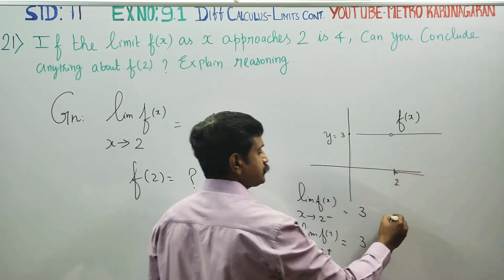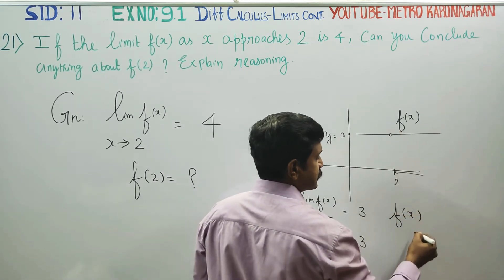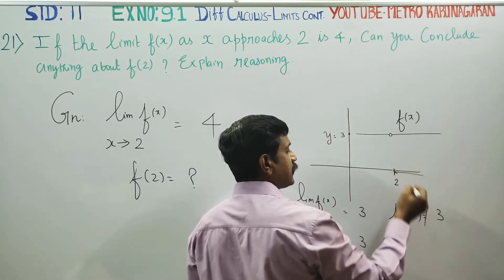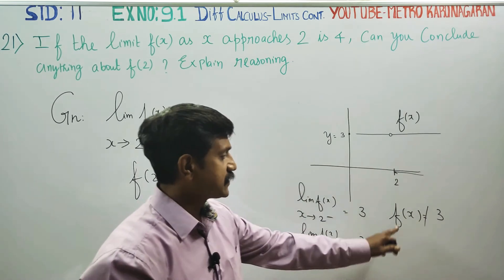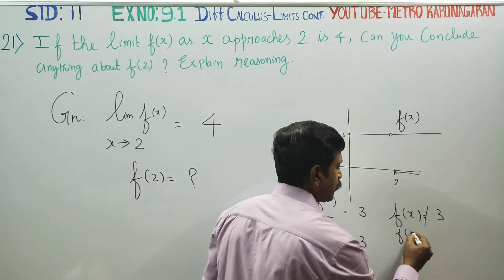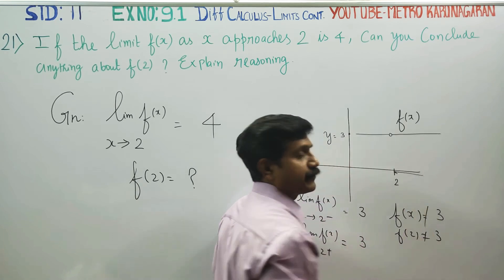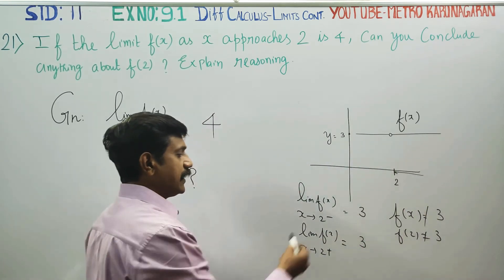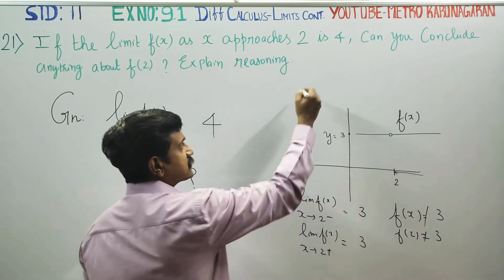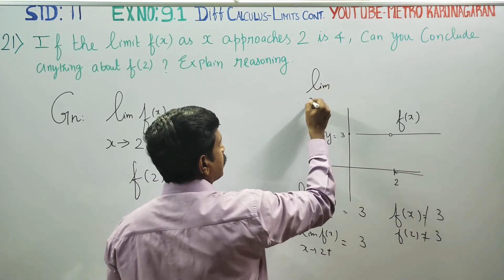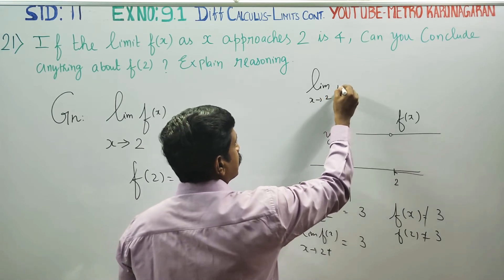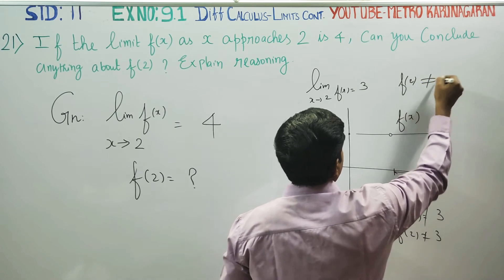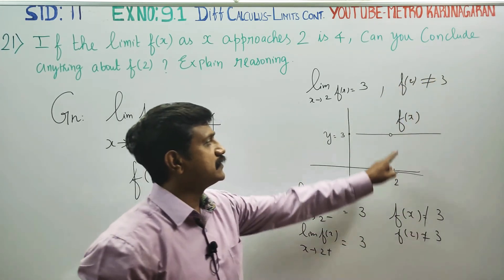Even though the limit of f(x) as x approaches 2 is 3, the value f(2) is not equal to 3. Since the left-hand and right-hand limits are equal, we can write: limit of f(x) as x turns to 2 is equal to 3. But f(2) is not equal to 3.